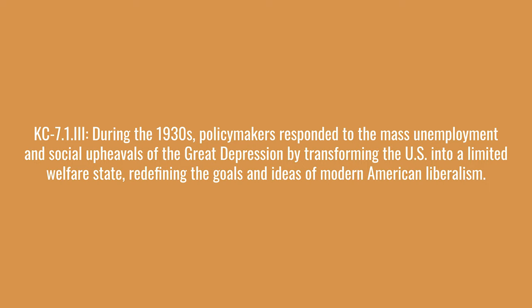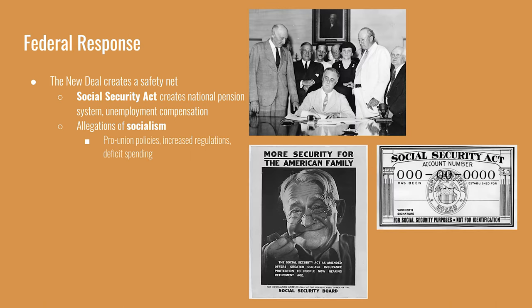During the 1930s, policymakers responded to mass unemployment and social upheaval by transforming the U.S. into a limited welfare state, redefining the goals of modern American liberalism. Under FDR's presidency, the Social Security Act created a national pension system: as people work, they are taxed and money goes into a trust, which pays people 65 and older monthly in proportion to their contributions. The idea is that current workers paying into the system will in turn have others paying in for them when they retire.